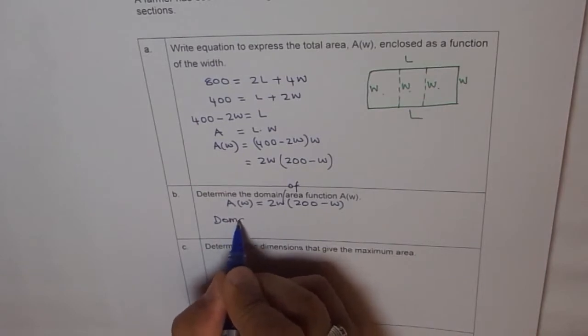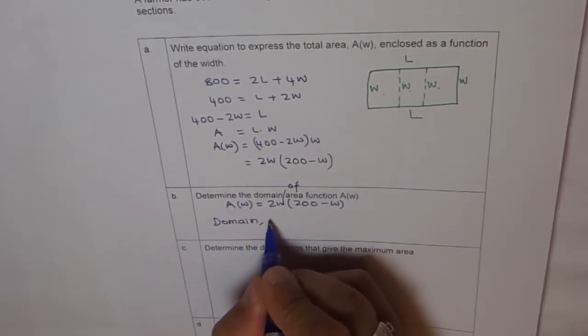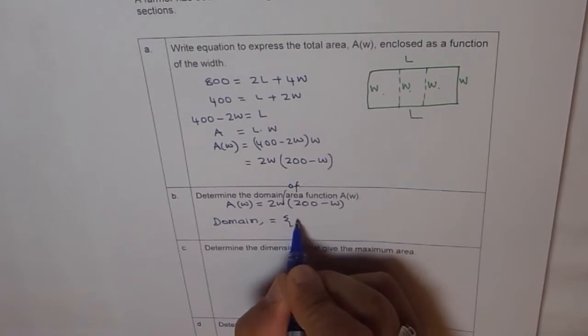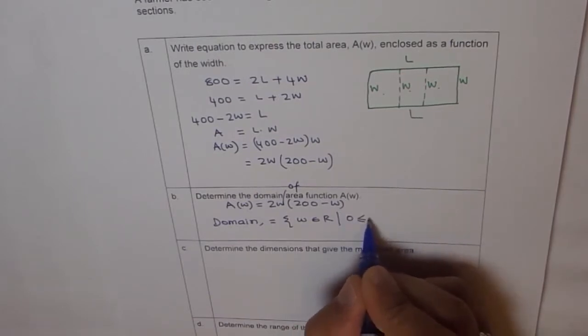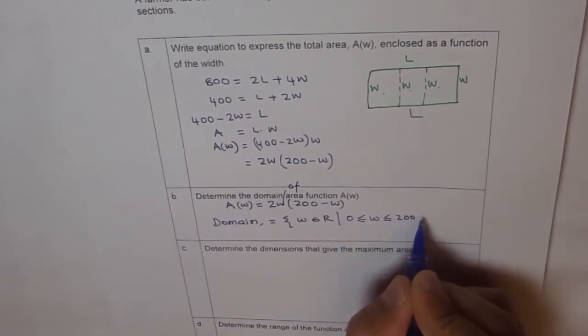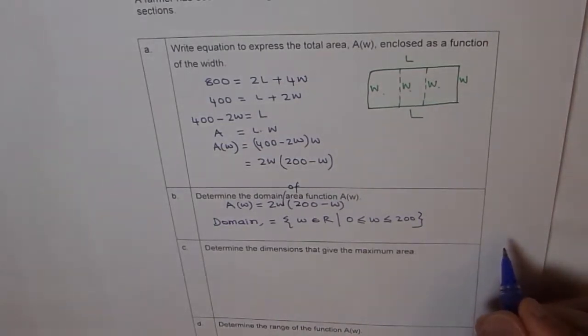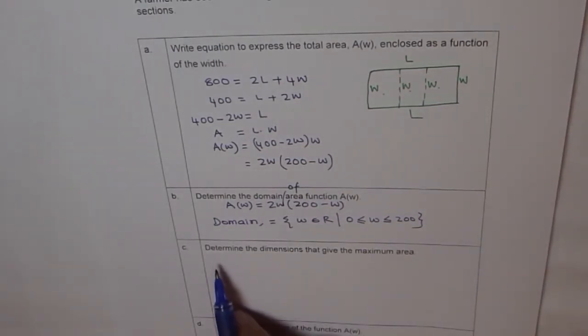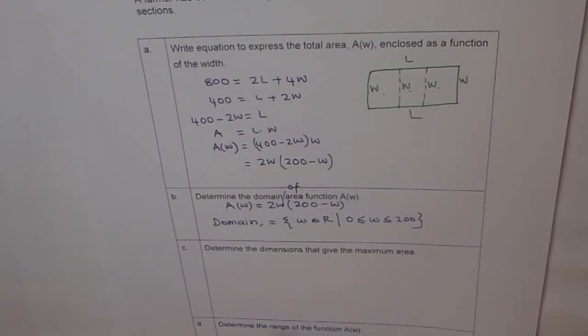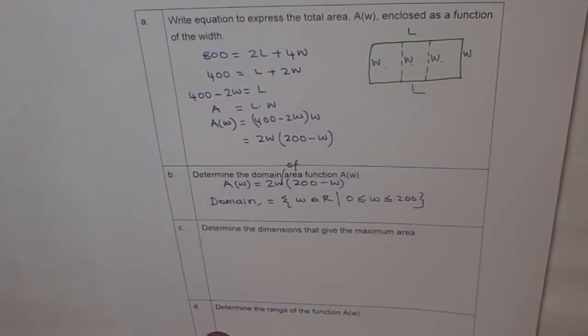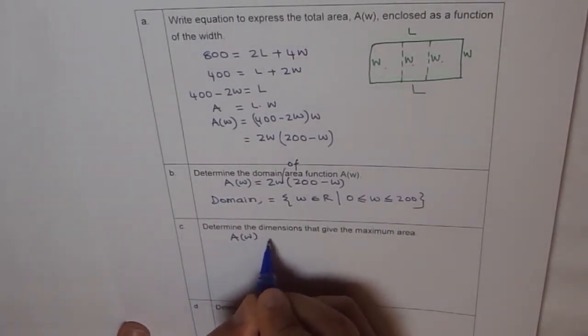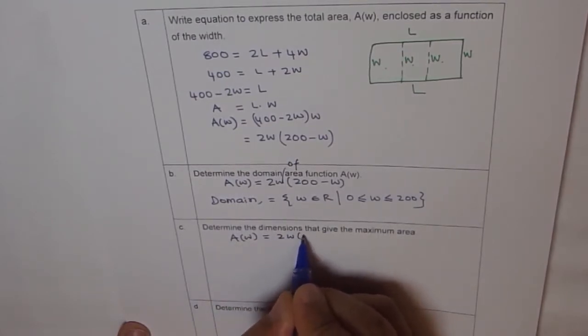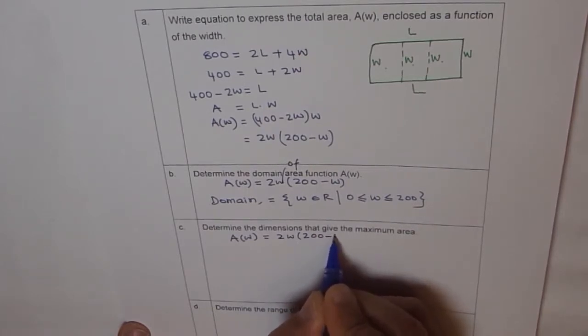So here the domain is equal to, we say width belongs to real numbers where it is between 0 and 200. That's how we get width. Now, we have to determine the dimensions that give maximum area. So now to maximize A(W), we can adopt different methods. Our function, area as a function of width is 2W times 200 minus W.